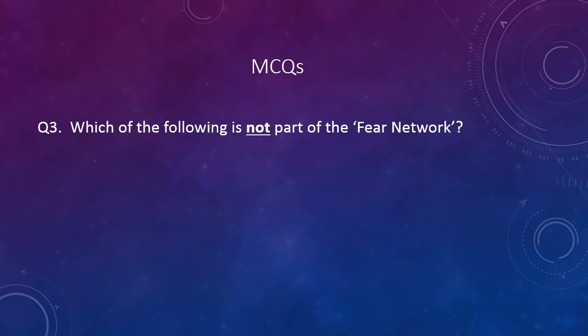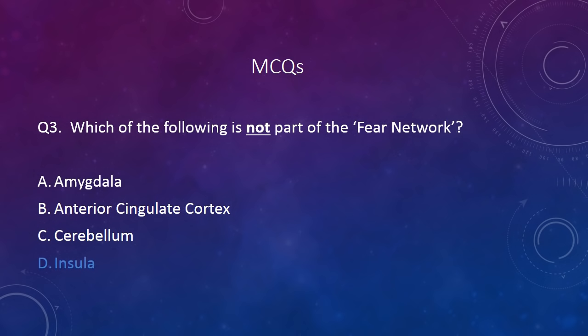Question three: Which of the following is not part of the fear network? The correct answer is C — the cerebellum. The other three options (amygdala, insula, and anterior cingulate cortex) are considered to be part of the fear network.